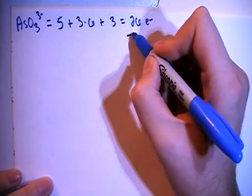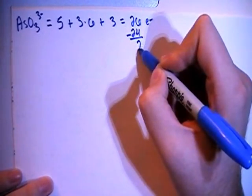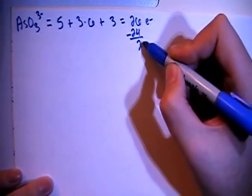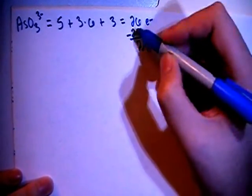We can go ahead and subtract out the largest multiple of 8, which is 24 in this case, giving us 2 electrons remaining, and divide that by 2, and that gives us 1 non-bonding pair.